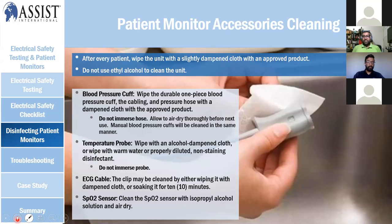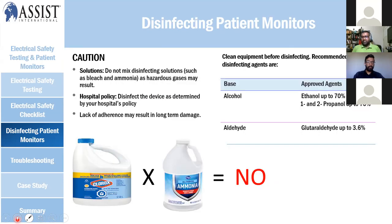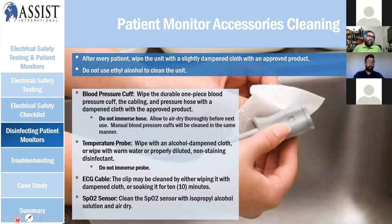For cleaning equipment before disinfection, always use an alcohol base — you can mix with ethanol up to 70%. These are approved agents. For patient monitor accessory cleaning, one common issue in hospitals is broken accessories, sometimes caused by using the wrong disinfection chemicals. Incorrect disinfectants can eventually break the insulator, making it hard and damaged over the long run.